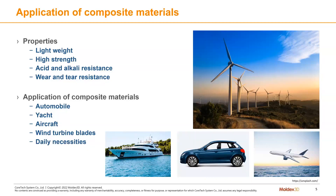In general, composite materials are light in their weight, high in their strength, plus they perform great resistance to acid and alkali, together with resistance to wear and tear. These properties explain why composite materials are widely used nowadays, such as in daily necessities, yacht, aircraft, wind turbine, automotive industry, and more.